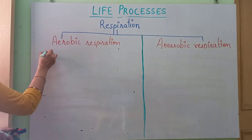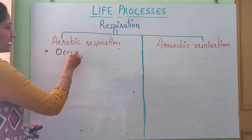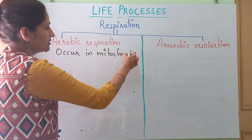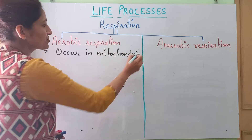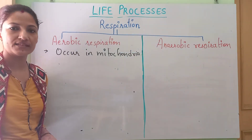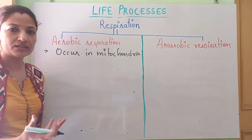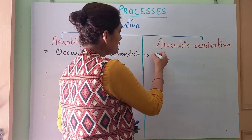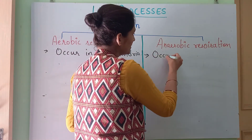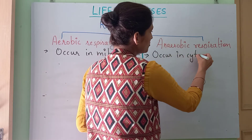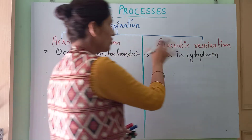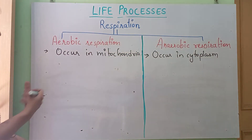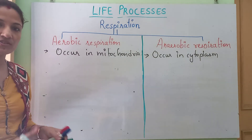Aerobic respiration takes place in the mitochondria of the cell. That is why we call mitochondria the powerhouse of the cell — because ATP molecules are generated within the mitochondria in aerobic respiration. Anaerobic respiration occurs in the cytoplasm of the cell. We are talking about cellular respiration here, not the exchange of gases which is called breathing or external respiration.